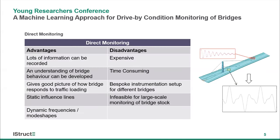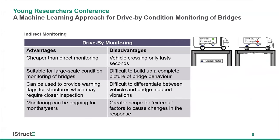The direct approach is very good and gives us lots of information, as Zach has shown — you can really understand how the structure is behaving. But due to the cost, access to bridges, and health and safety implications, it's not really feasible for monitoring all bridges on a transport network when you might have hundreds of thousands of bridges. That's the main reason for the move towards indirect monitoring approaches — it's cheaper and a more sustainable option for large-scale monitoring.